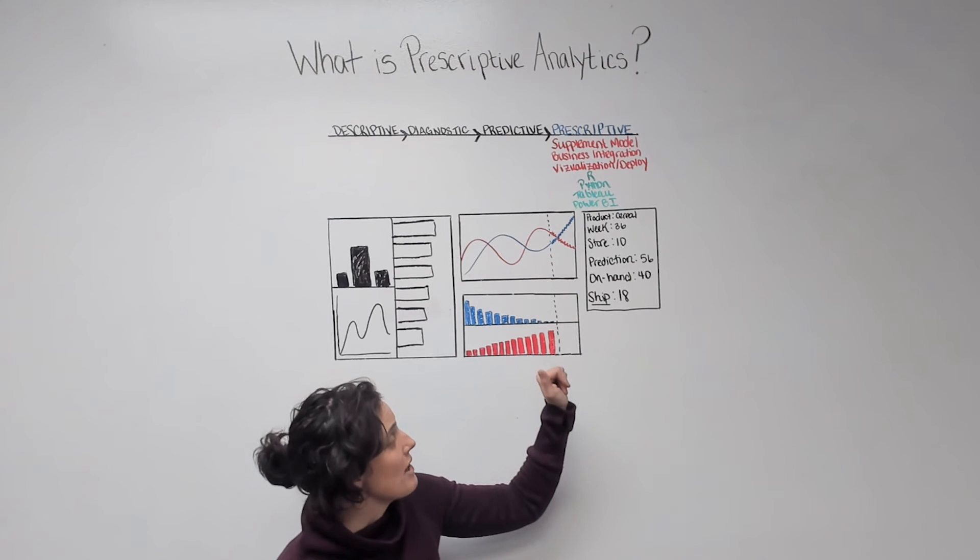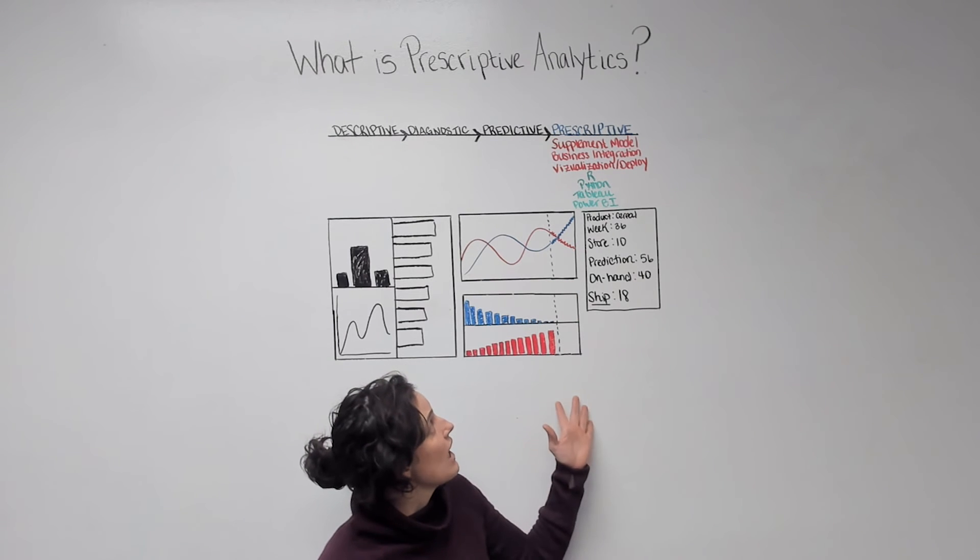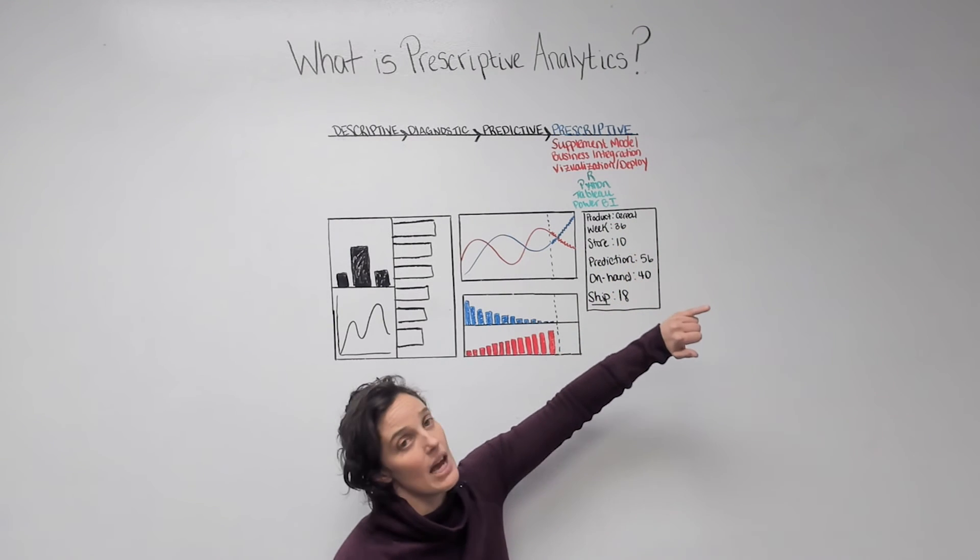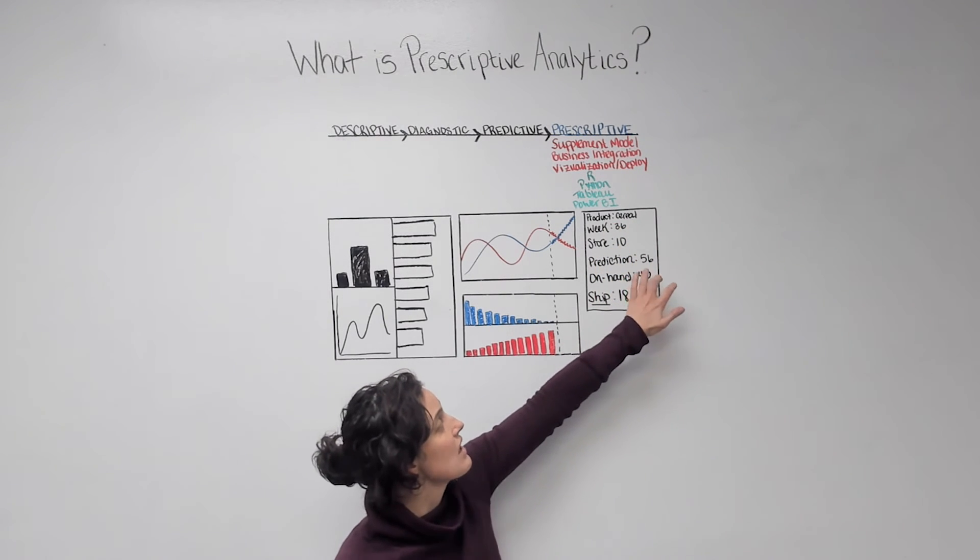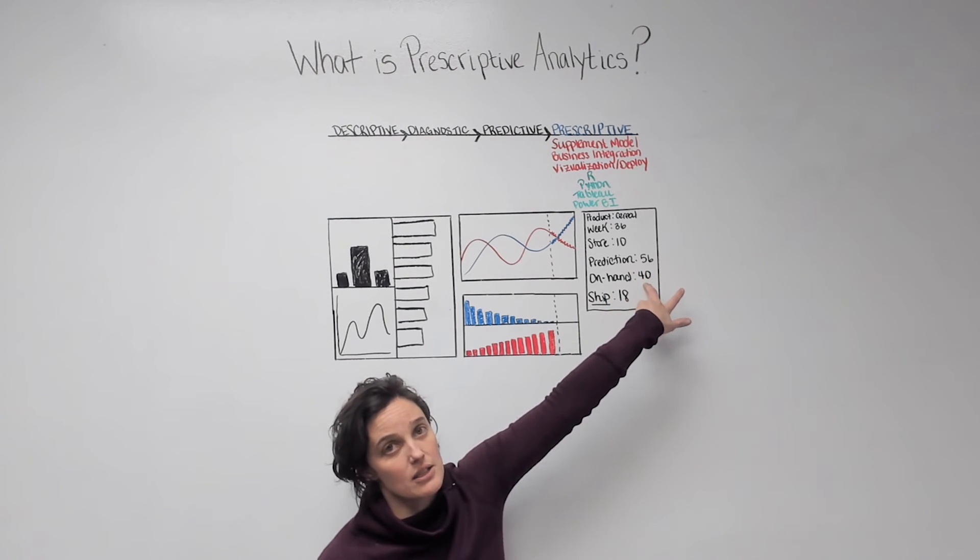So if we take this information and integrate it into the business process, we can say, well, for cereal on week 36 in store 10, we predict that we're going to sell 56 units of cereal, but we know we only have 40 on hand.